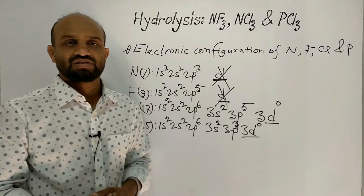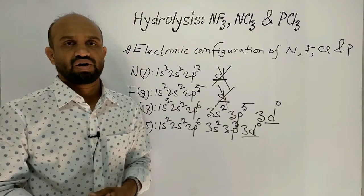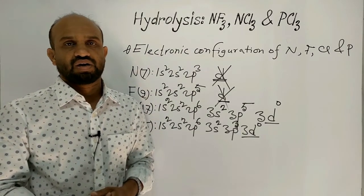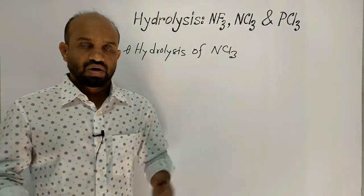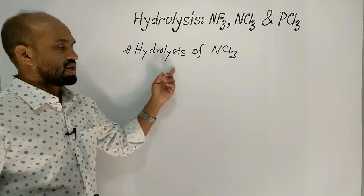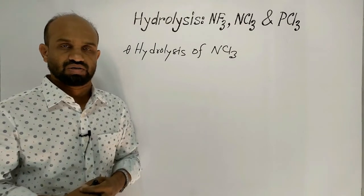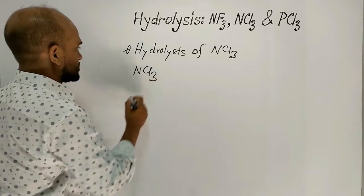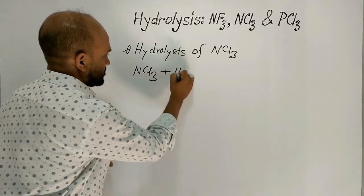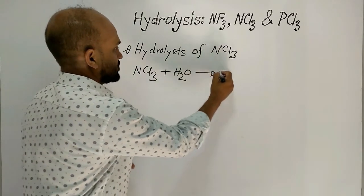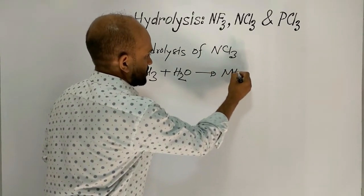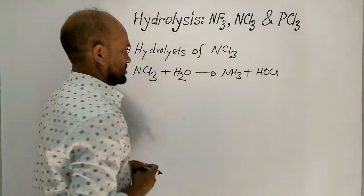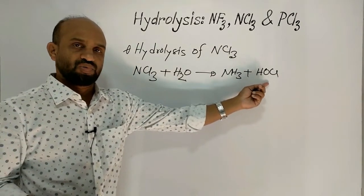Actually, the d orbital is responsible for the hydrolysis reaction. Let's see the role of the d orbital in the hydrolysis reaction. Now the point is the hydrolysis of Nitrogen Trichloride. Let's see the reaction first. Nitrogen Trichloride reacts with water to form ammonia and hypochlorite. This is hypochlorite.